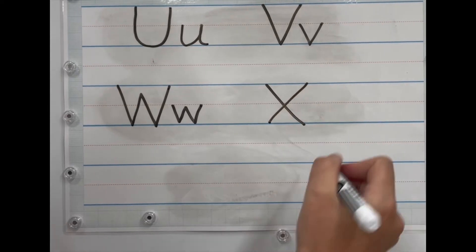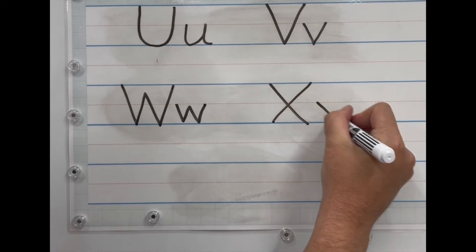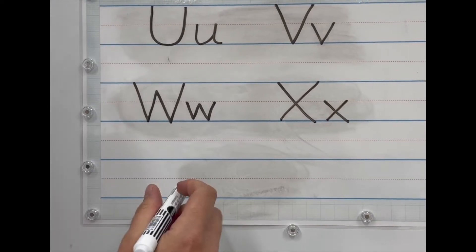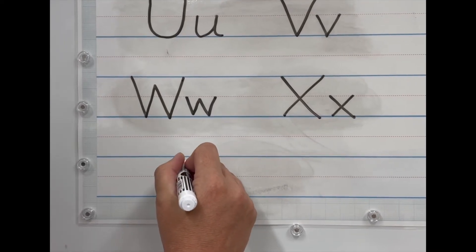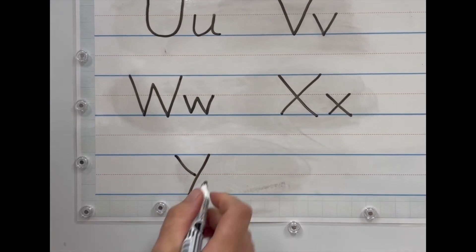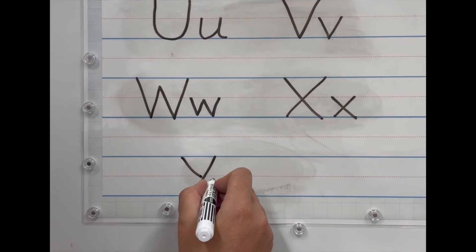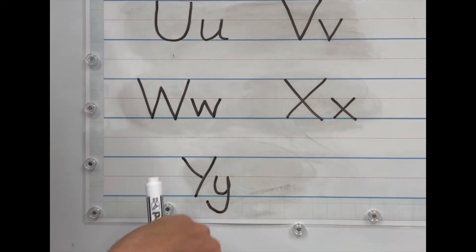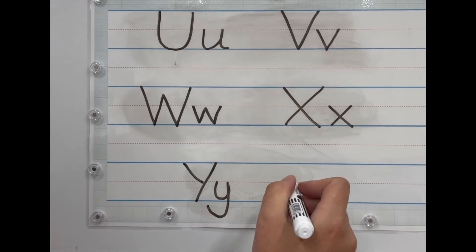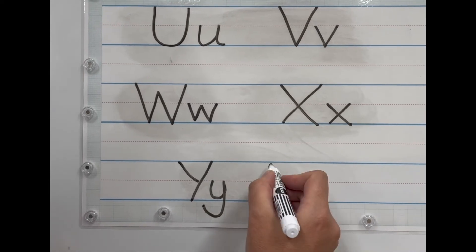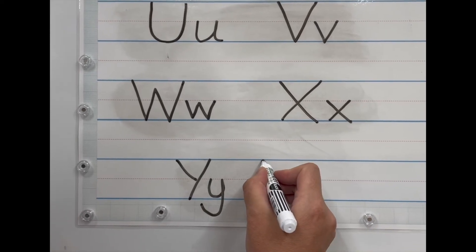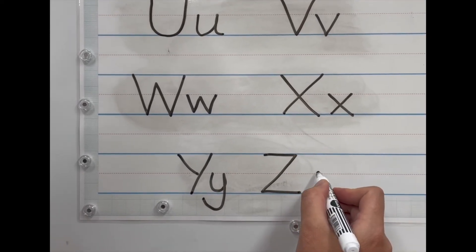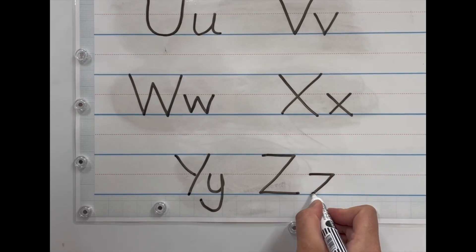two, small X one two. Nearly finished, last two. Y: big Y one two and small Y one two, again below the line like P. And finally Z or Z, ready: big Z one two three and small Z one two three.